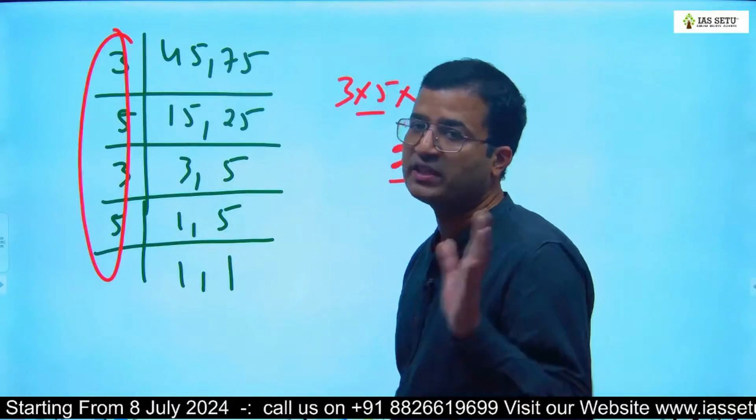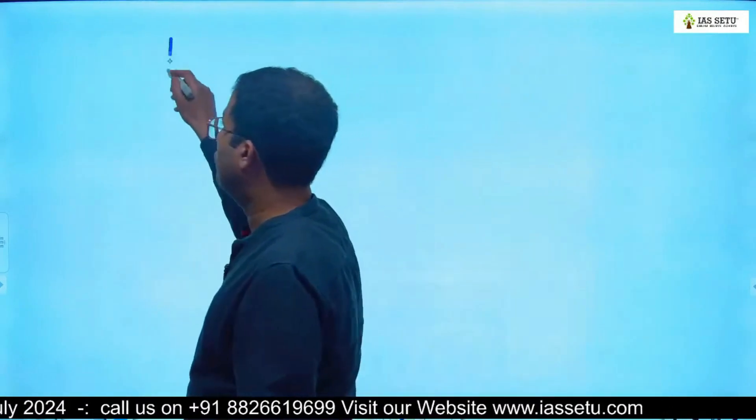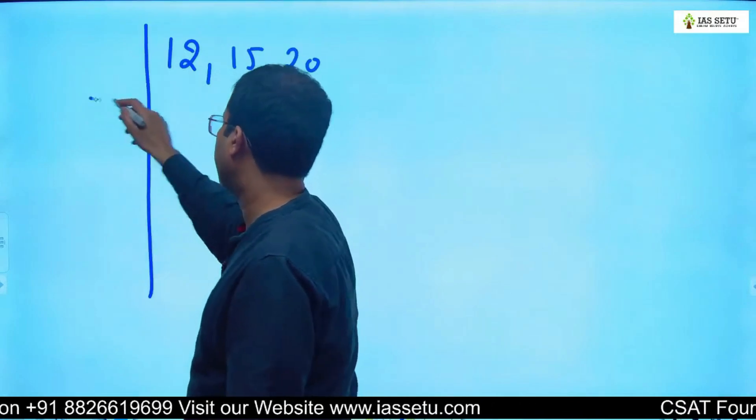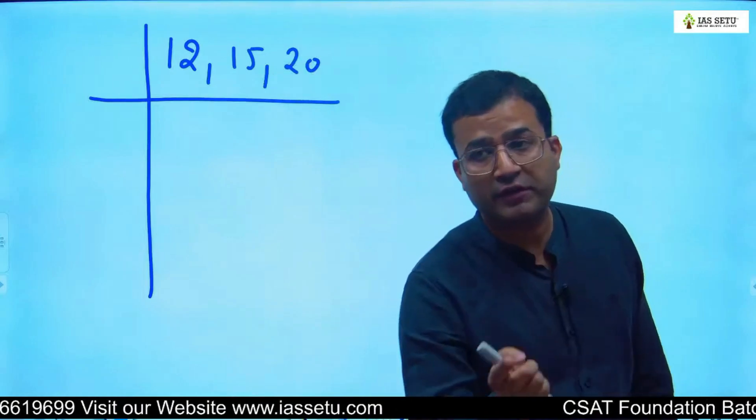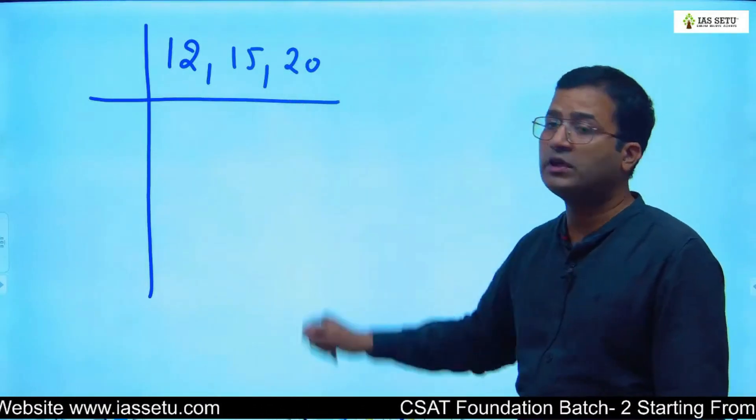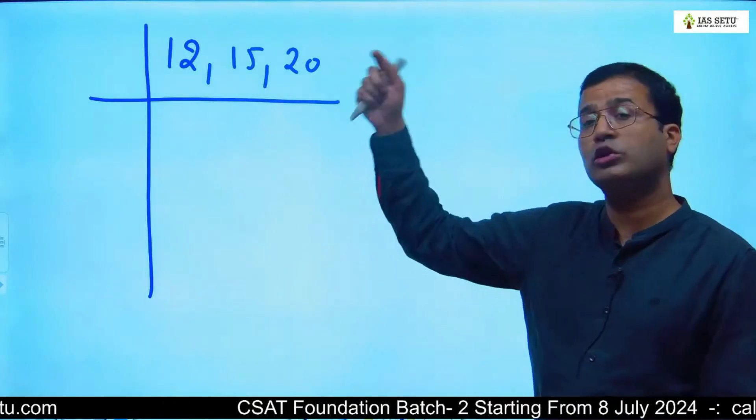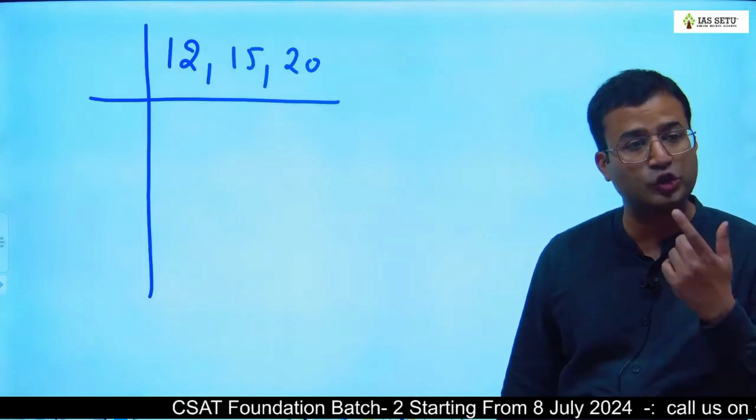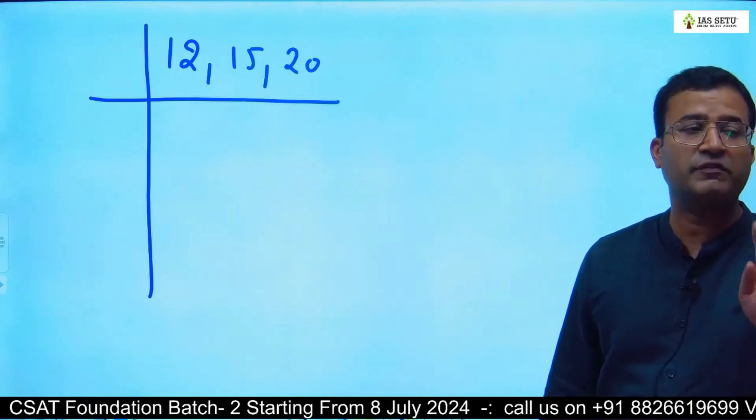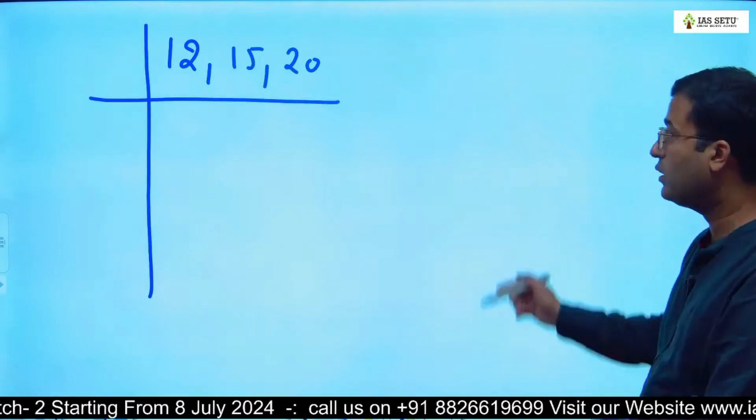I'll tell you one of the best examples to learn LCM. I take 3 numbers: 12, 15, 20. If we take 12 and 15, 3 is common. 15 and 25, 5 is common. 12 and 24, 4 is common. But we don't have any common factor other than 1 from all these 3 numbers. There's no number that is common in all 3 numbers other than 1.